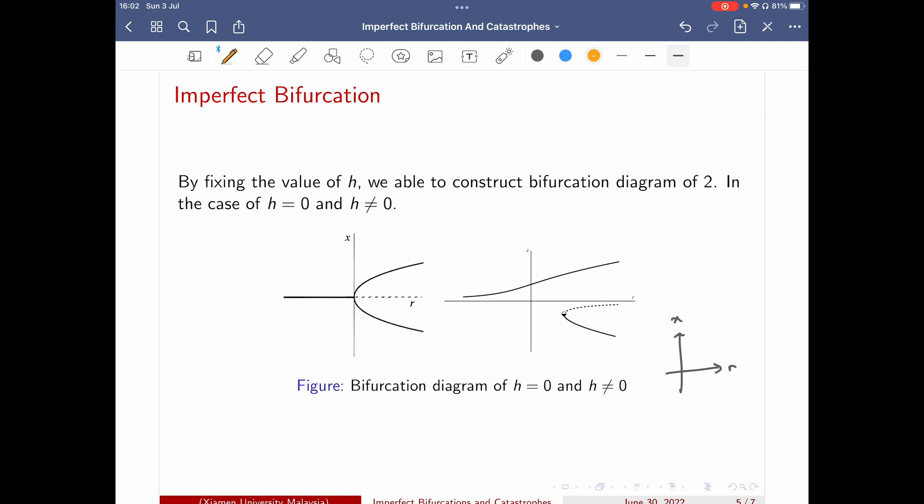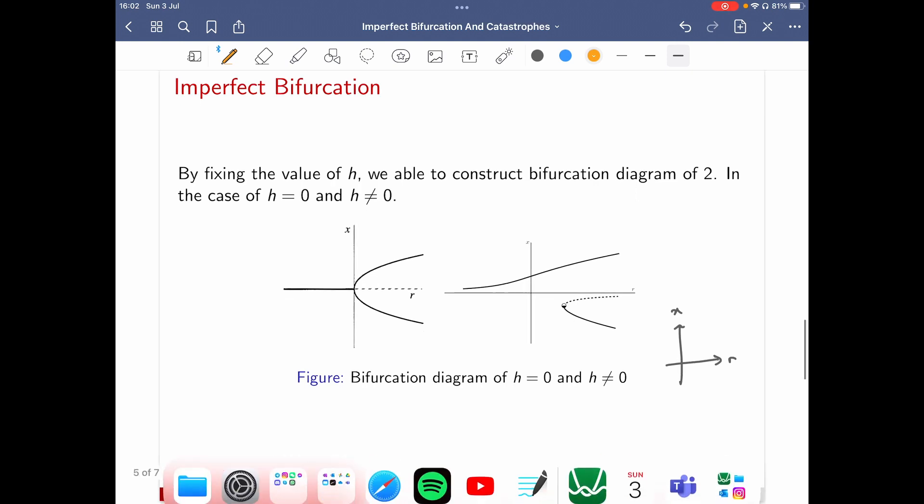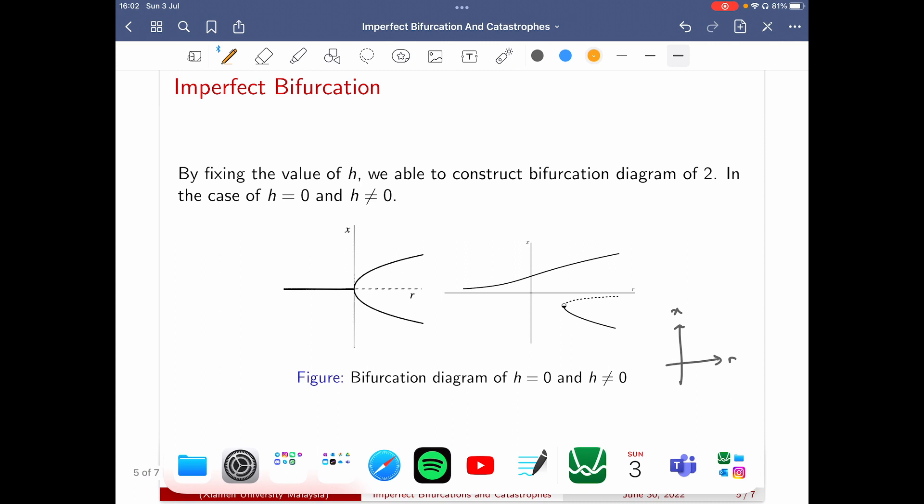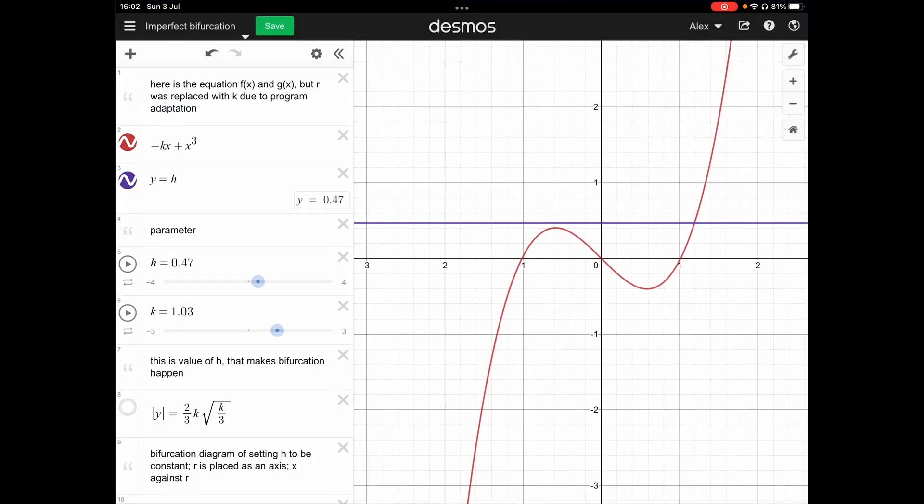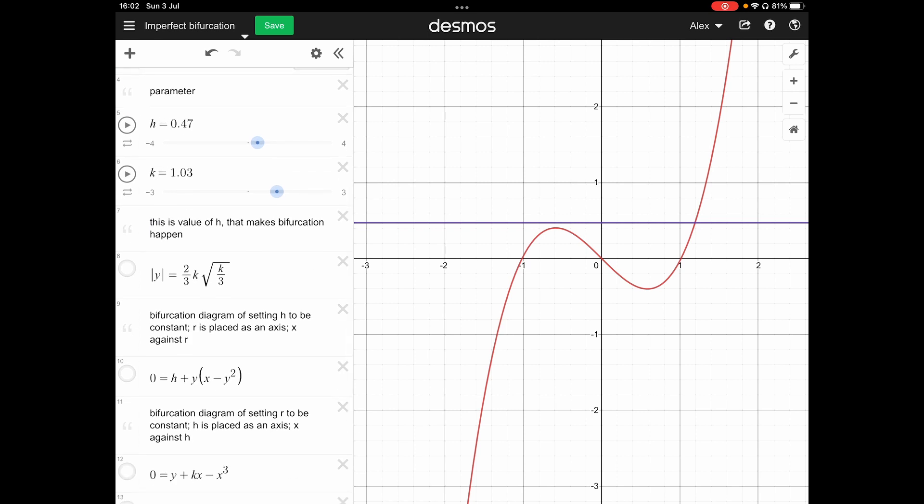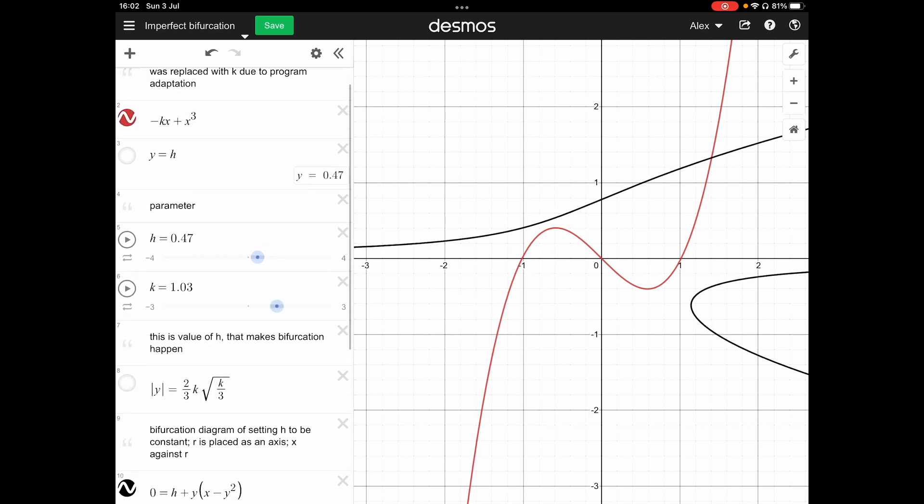So fixing the value to be h equal to zero and h not equal to zero like just now we did, we happen to know that there is a saddle point happening and another one is just a perfect pitchfork. Let's look into the bifurcation diagram.